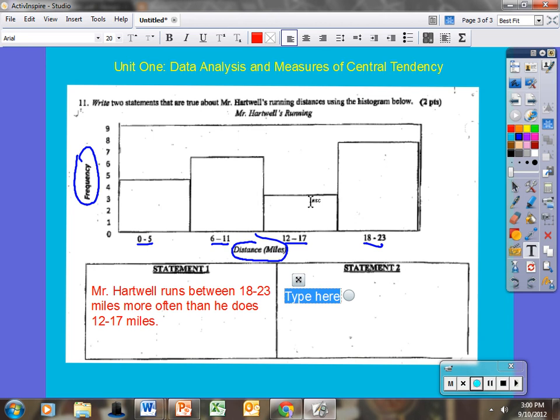This is where it kind of becomes rough. I'm going to take a look here. Mr. Hartwell. I'm going to focus in on the twelve to seventeen again. Mr. Hartwell ran between twelve and seventeen miles. Now I'm going to follow this bar across. The top line of this bar. I'm going to say that's three. So Mr. Hartwell ran between twelve and seventeen miles three times. I am done.